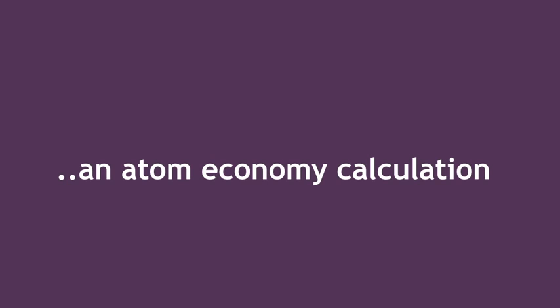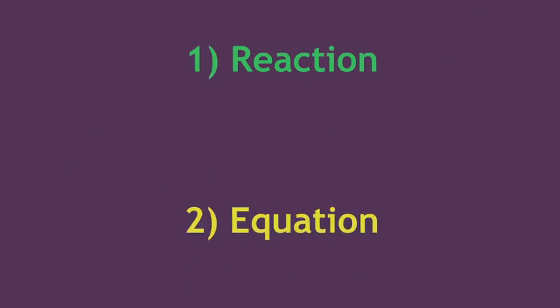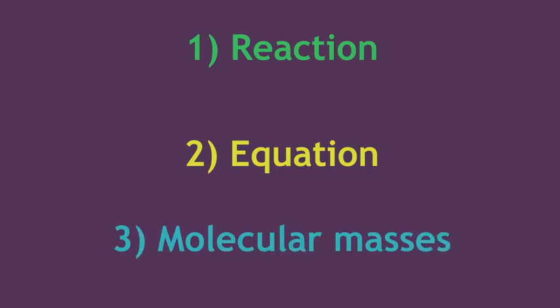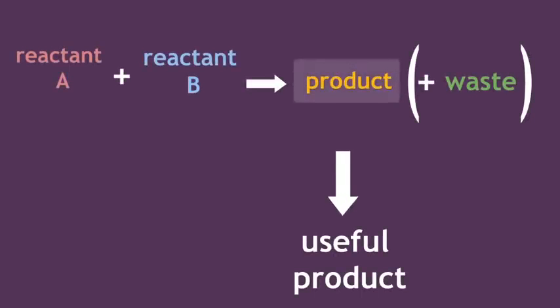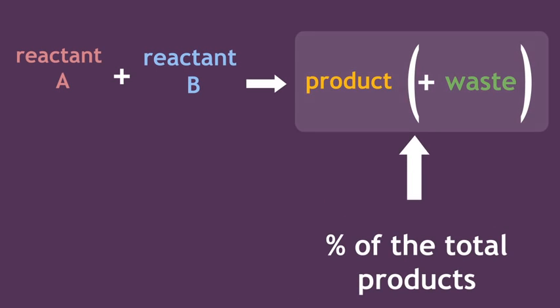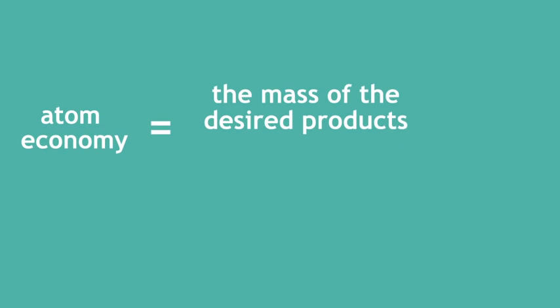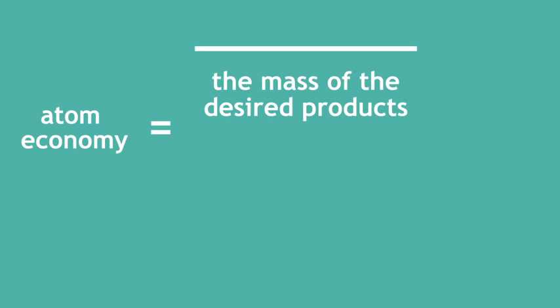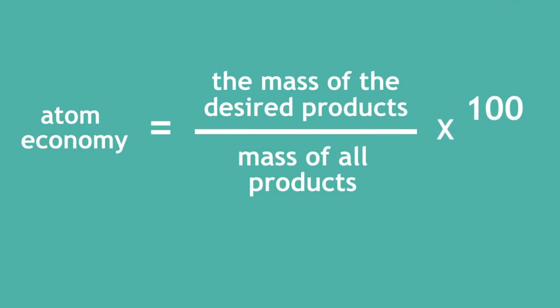To carry out an atom economy calculation, we must look at our reaction and the equation and use the molecular masses. Remember, we want to calculate the amount of useful product as a percentage of the total products. So the equation for this will be: Atom economy equals the mass of the desired products divided by the mass of all the products multiplied by 100.